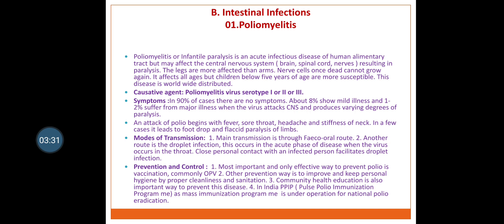Close personal contact with an infected person facilitates droplet infection. Prevention and control: the most important and only effective way to prevent polio is vaccination. Commonly, OPV means oral polio vaccine. Other prevention includes improving personal hygiene by proper cleanliness and sanitation. Community health education is also important. In India, PPIP — Pulse Polio Immunization Program — is a mass immunization program under operation for national polio eradication.